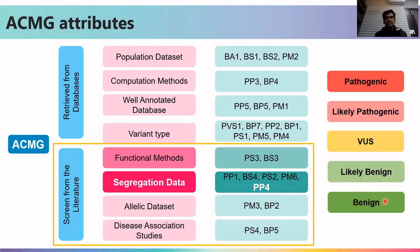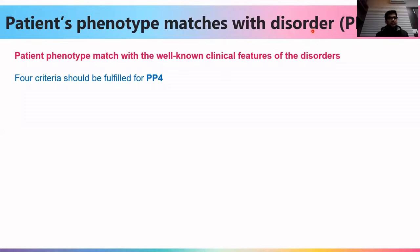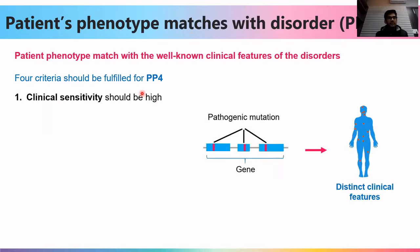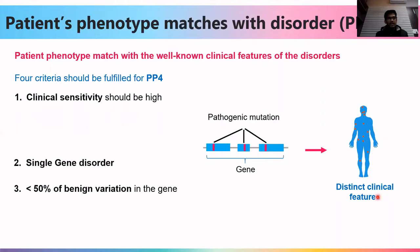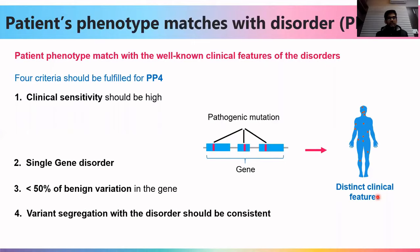The next attribute in the segregation dataset is PP4. This attribute is used when a patient's phenotype matches the distinct clinical features of a disorder. Four criteria must be satisfied: first, clinical sensitivity should be very high, meaning different pathogenic mutations within a gene produce distinct clinical features; second, it should be a single gene disorder; third, there should be less than 50% benign variation within the gene; and fourth, variant segregation should be consistent with the disorder.